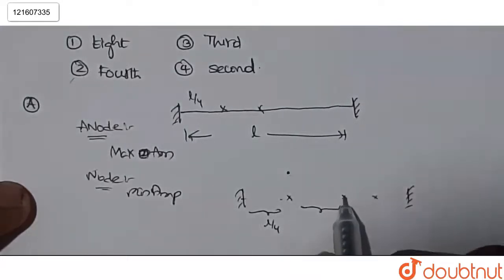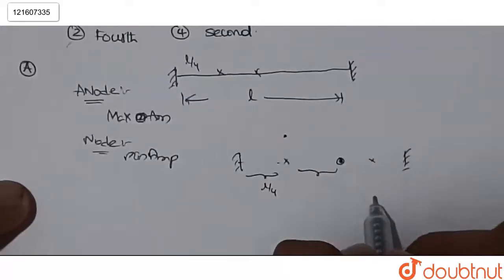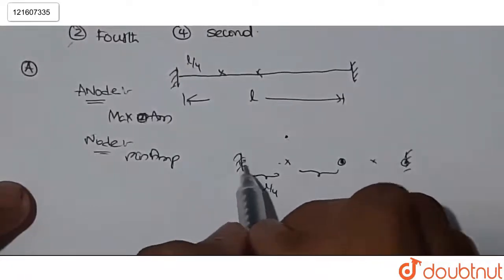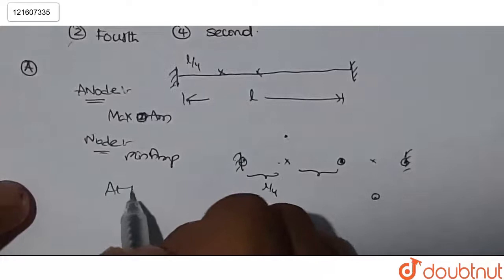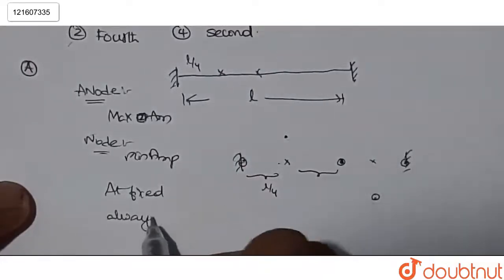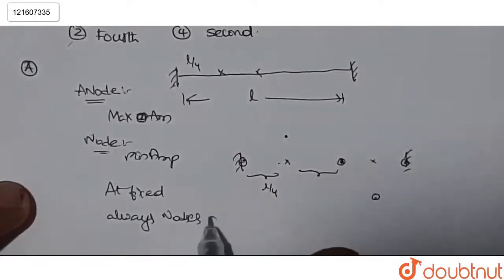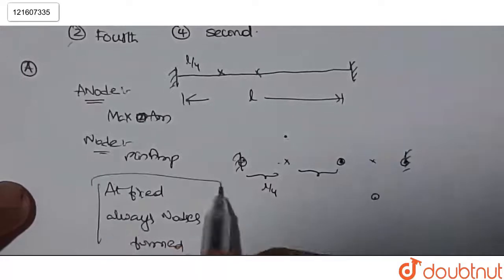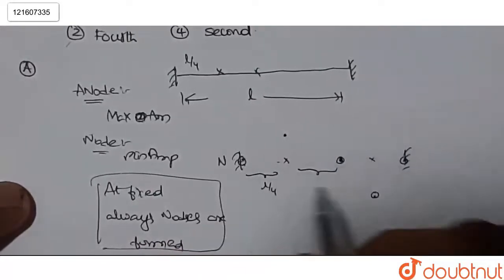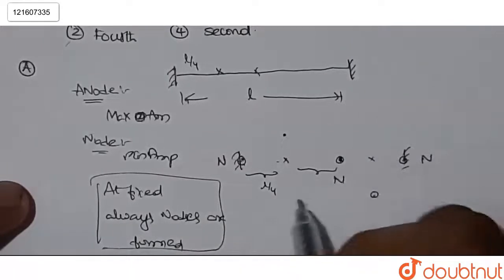So here we have minimum point. So here we have an antinode but with negative direction. So here we have another node. At fixed ends, at fixed ends always there will be nodes. At fixed ends always nodes are formed.